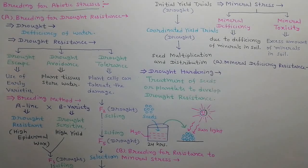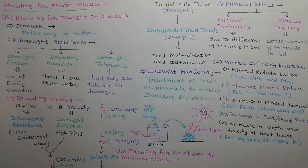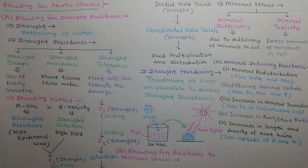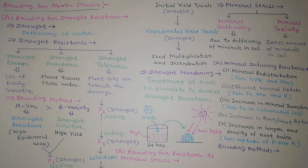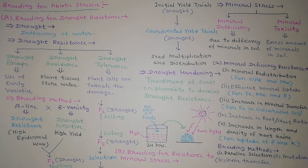Mineral deficiency resistance can be developed by the following methods: mineral redistribution, for NPK and manganese; efficient mineral uptake, for iron, manganese, and phosphorus; increase in mineral transfer, for iron in calcareous soil; increase in root-to-shoot ratio; and increase in length and density of root hairs, for uptake of phosphorus and potassium. The breeding methods used include pure line selection in local varieties, mutation, and gene transfer from related species.